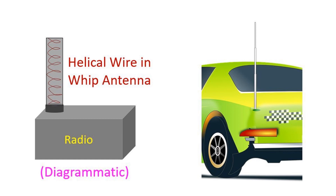Though the inductance of the helix matches the impedance, performance in terms of gain and range is less than the standard quarter wavelength antenna. Whip antennas, commonly seen on automobiles, are also monopole antennas with a helical wire either inside or outside and a flexible base material.